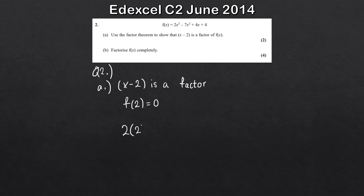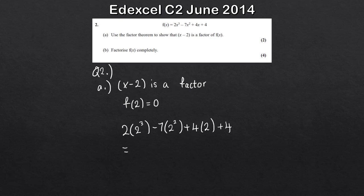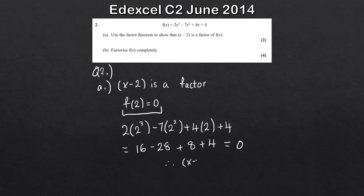So that's going to be 2 lots of 2 cubed minus 7 lots of 2 squared plus 4 lots of 2 plus 4. So that's 8 times 2 is 16, minus 7 times 4 is minus 28, and just keep working all this out: plus 8 and then plus 4. If I simplify all this, I'll get 0, which is exactly what we want. Therefore, x minus 2 is a factor of f of x.